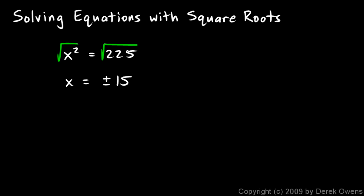So that one's easy: x is plus or minus 15. When you have the variable that you're trying to find that is squared, it's very common to have two answers.